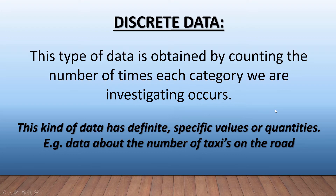Discrete data is the type of data obtained by counting the number of times each category we are investigating occurs. This kind of data has definite, specific values or quantities. For example, data about the number of taxis on the road — is that definite? Is that specific? Yes, it is.